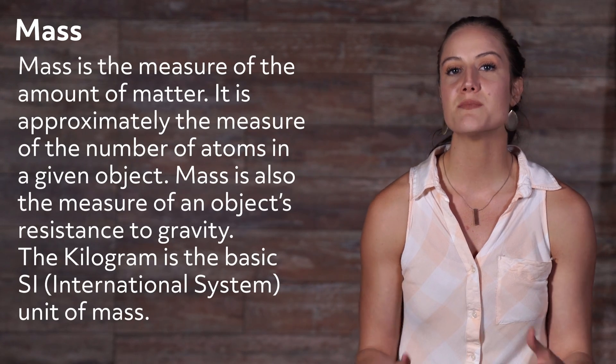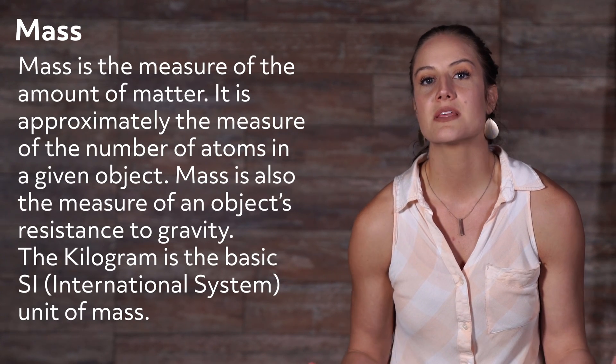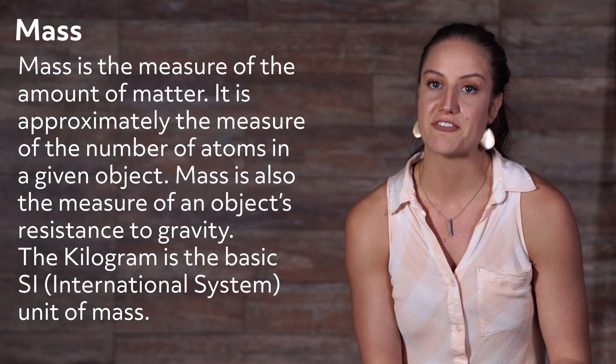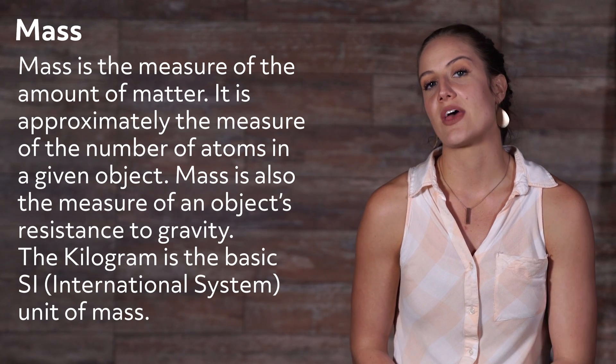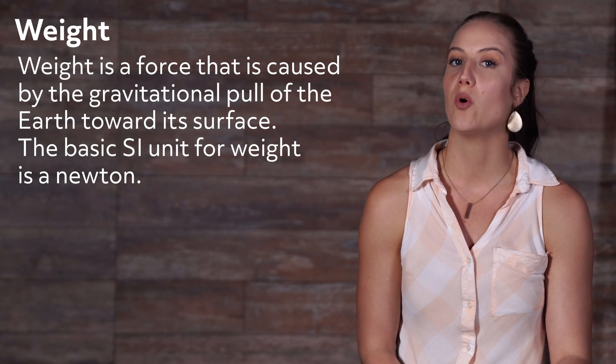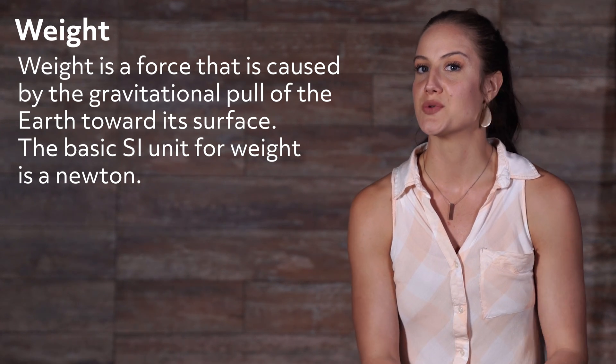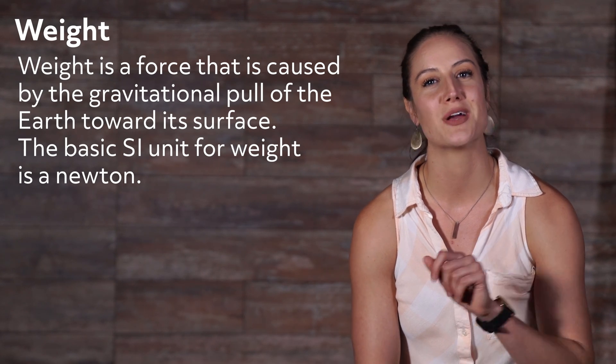Mass, weight, volume, and specific gravity get misused quite often, so let's take a closer look. I'll walk through the definition of each, and then we'll go back through and clear up some confusions that lead to these getting misused with one another. Mass is the measure of the amount of matter — it is approximately the measure of the number of atoms in a given object. Mass is always the measure of an object's resistance to gravity. The kilogram is the basic SI unit of mass. Weight is a force that is caused by the gravitational pull of the earth towards its surface. The basic SI unit for weight is a Newton.